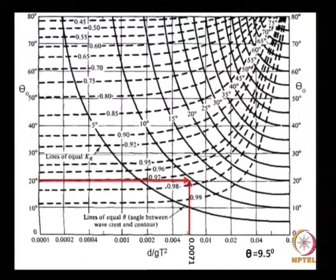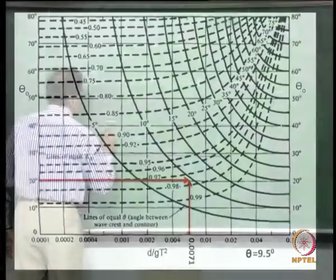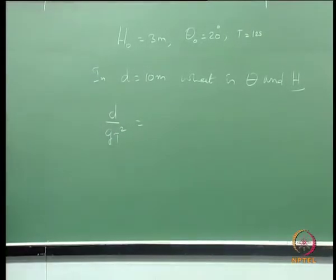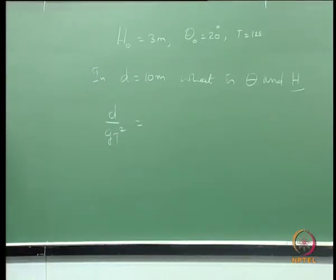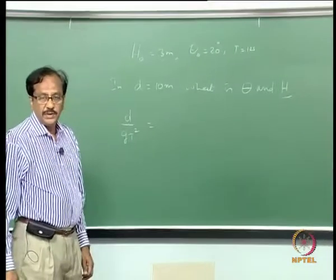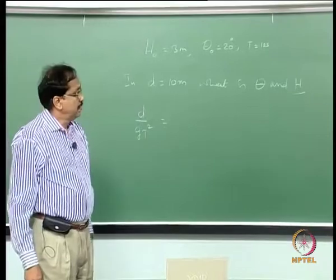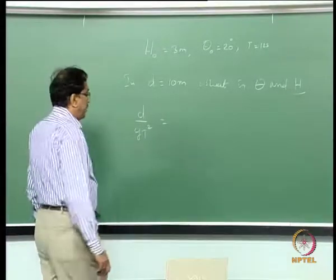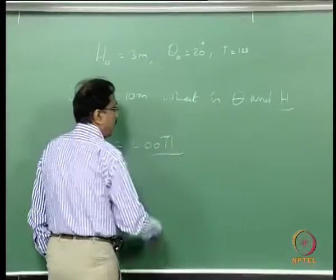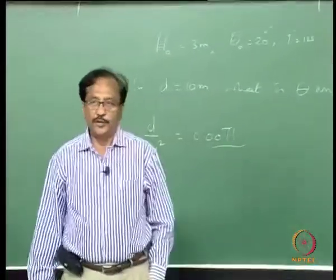The nomogram of Dean and Dalrymple looks like this. What you need to do is calculate D/GT². For the present problem it comes out to approximately 0.007.